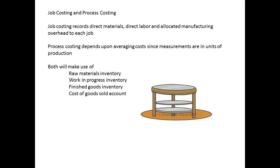With job costing we were able to record direct materials, direct labour and manufacturing overhead for each job. In process costing we are looking at businesses that do not have distinct jobs or batches, so that the production can be considered as continuous. This means that the easiest way to look at costs is to consider flows during an accounting period. To do this we make use of average cost measurements in terms of units of production. Since there may be several stages in the production process, we divide the process into departments.